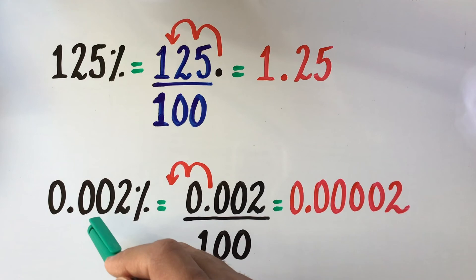So to convert any percentage into its decimal form, we first write it as a fraction over 100 and then move the decimal point two places to the left to get the answer.